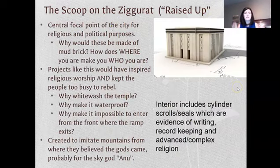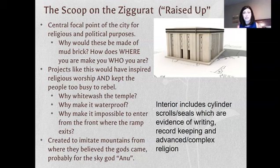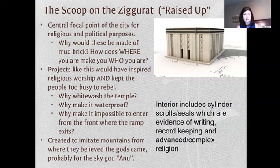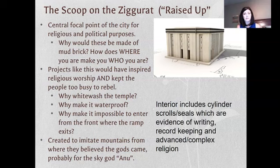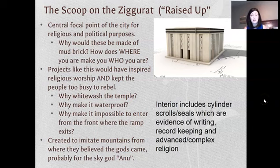Ziggurats — meaning roughly 'raised up' — were placed right in the middle of Sumerian cities, a visual reminder that religion is at the heart of civilization. Rulers wanted these built because their power came from saying 'the god said so' — the more people believed, the better. A massive project like the White Ziggurat and its temple would visually reinforce the religion, give people a job, keep them employed and fed, and reduce the anger that causes so many problems in history.